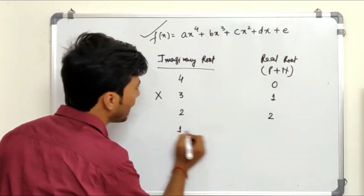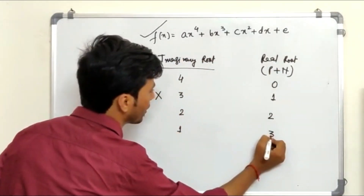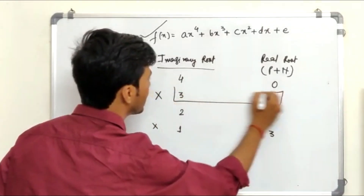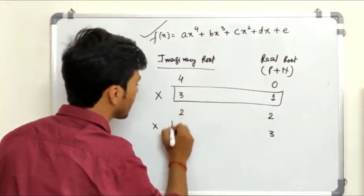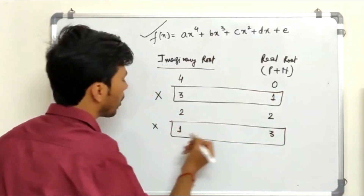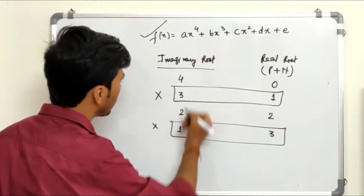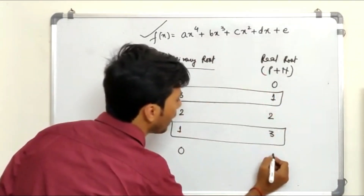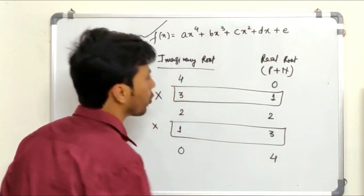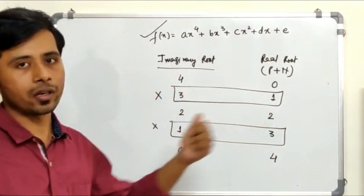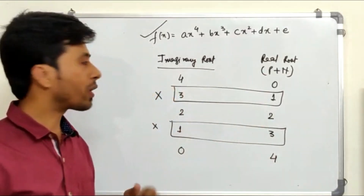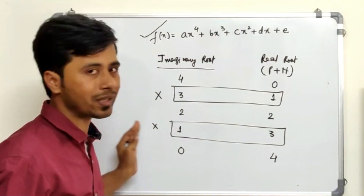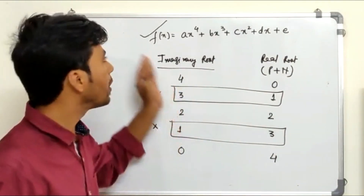Having 1 imaginary root and 3 real roots is not possible, as imaginary roots must be even. Similarly, having 3 imaginary and 1 real is not possible. You can also have 0 imaginary roots and 4 real roots — positive and negative combined. I hope now you have a clear picture of how imaginary roots appear in a polynomial.